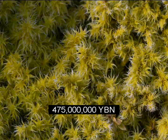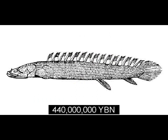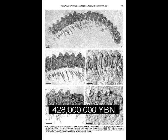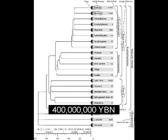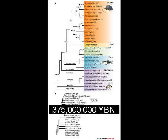Nonvascular plants — liverworts, mosses. Plants live on land. Jawed vertebrates. First tooth. Lung. Animals live on land — arthropods. Vascular plants. First forests. First tetrapods — organisms with four feet.